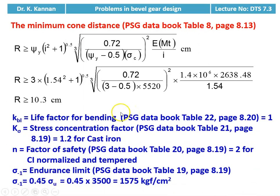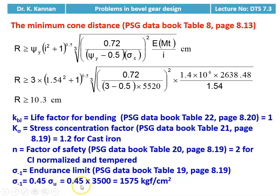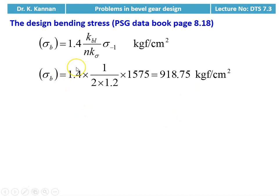Then we calculate the design bending stress. KBL (life factor for bending) = 1; K_sigma (stress concentration factor for cast iron) = 1.2; n (factor of safety) = 2 for cast iron normalized and tempered. Endurance limit sigma_{-1} = 0.45 × sigma_u = 0.45 × 3500 = 1575 kgf/cm². Design bending stress: sigma_b = 1.4 × KBL / (n × K_sigma) × sigma_{-1} = 1.4 × 1 / (2 × 1.2) × 1575 = 918.75 kgf/cm².